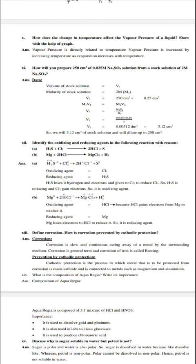Question 14: What is the composition of aqua regia? What is its importance? Aqua regia is composed of HCl and HNO3 in the ratio of 3 ratio 1. Its importance: it is used to dissolve gold and platinum, used in labs to clean glassware, and used to produce chloroauric acid.